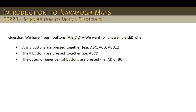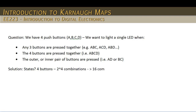Initially, the first thing we have to identify is how many states. Well, there are four buttons — that means there are 2 to the power of 4 combinations, which is 16 combinations. So we have to look at our circuit and evaluate how it should behave for all 16 of these combinations.